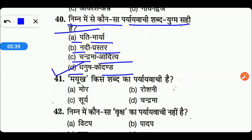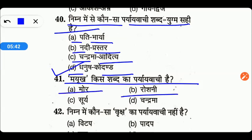Next है: मयूख शब्द का पर्यायवाची है — मूर, रोशनी, सूर्य, या फिर चंद्रमा। Option number B — रोशनी।